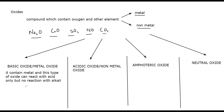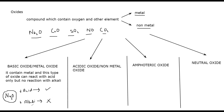For example, we have sodium oxide. Sodium oxide contains metal, so it's also called a metal oxide. If I add an acid, there will be a reaction. But if I add an alkali to sodium oxide, there is no reaction — it will not react with an alkali. The type of oxide which can only react with acid, does not react with alkali, and contains a metal with oxygen — we call this a metal oxide.